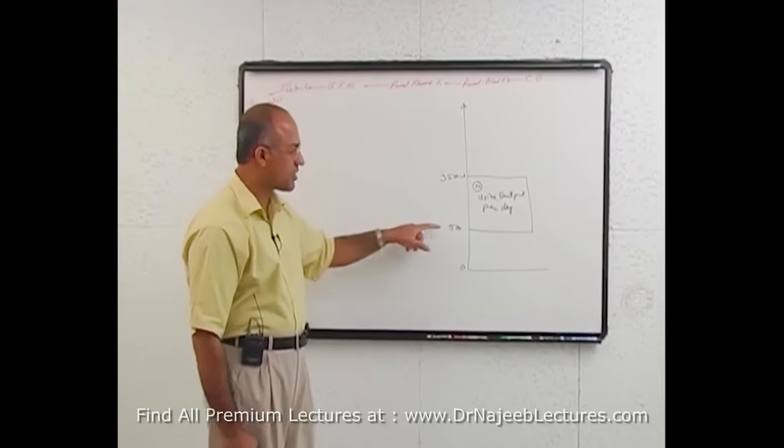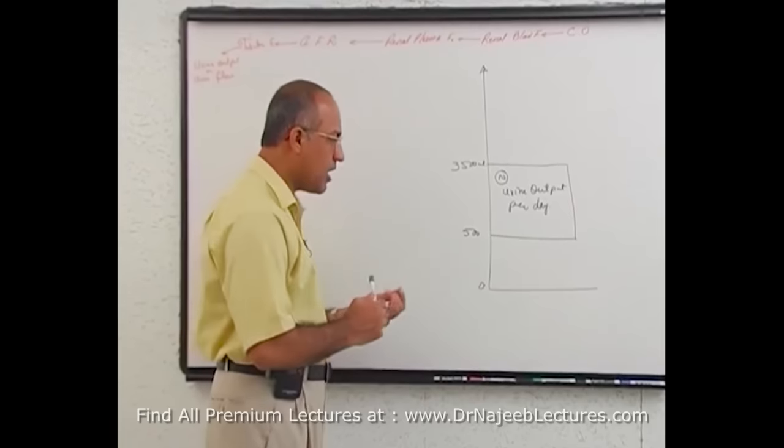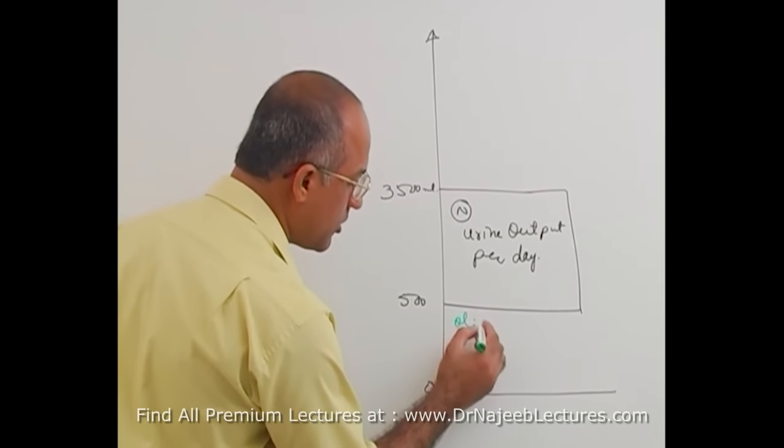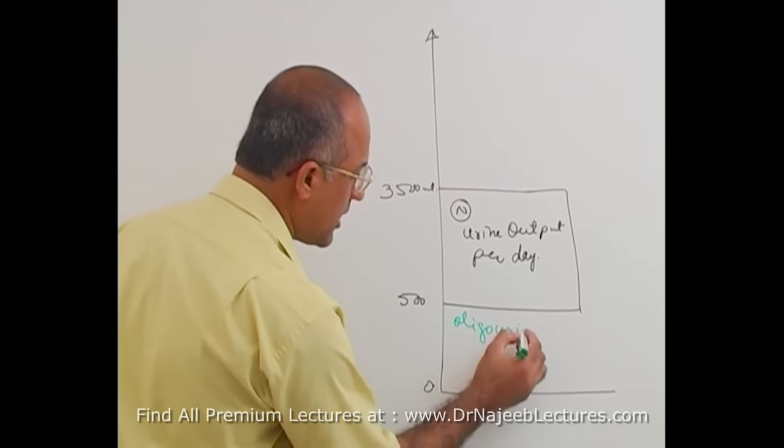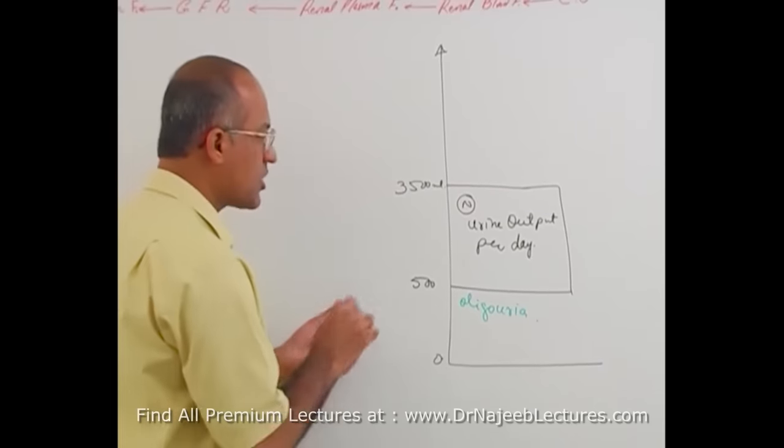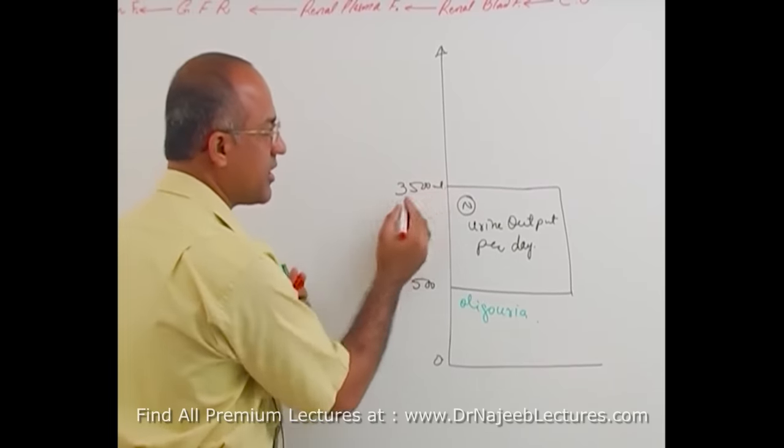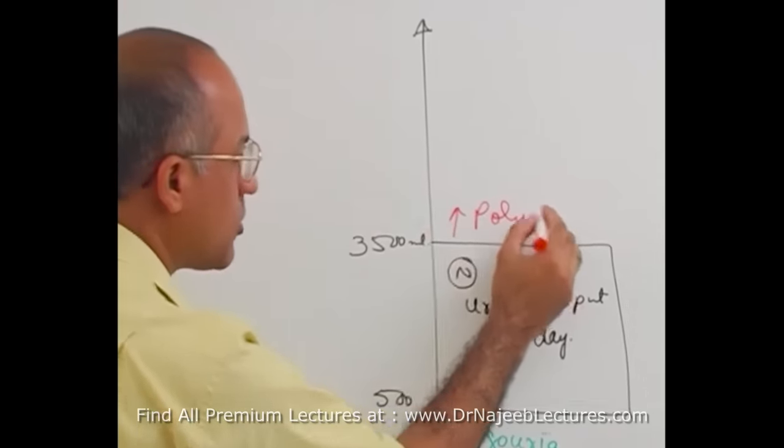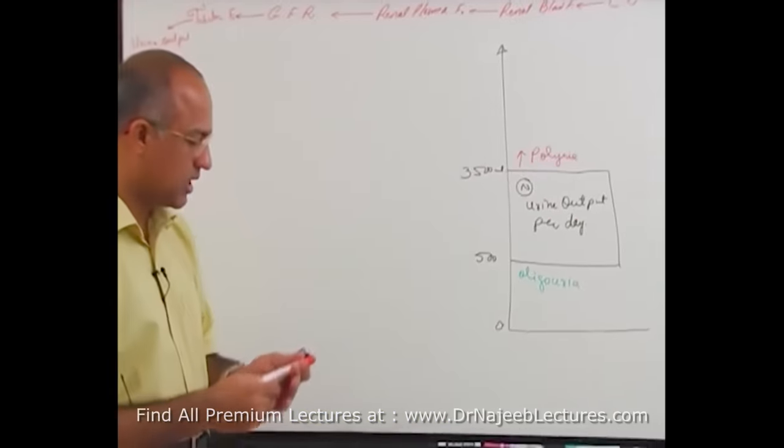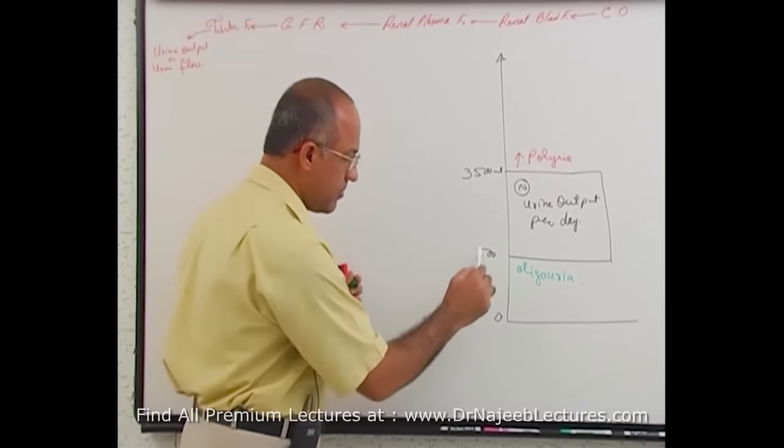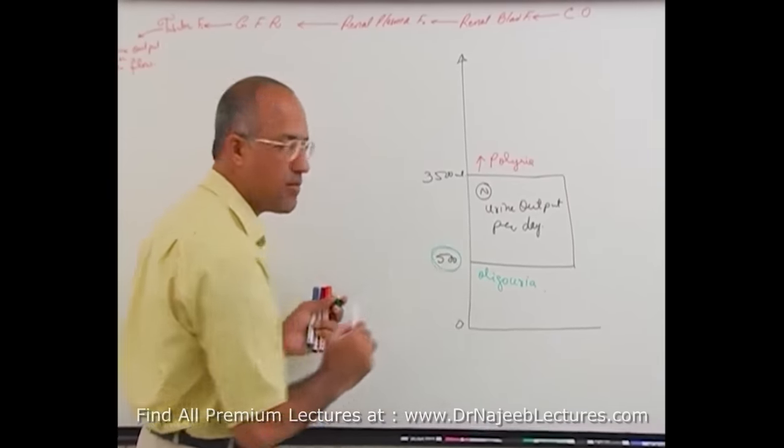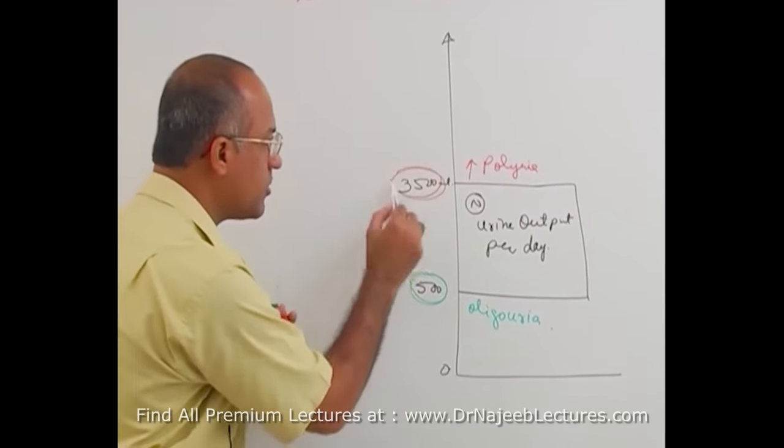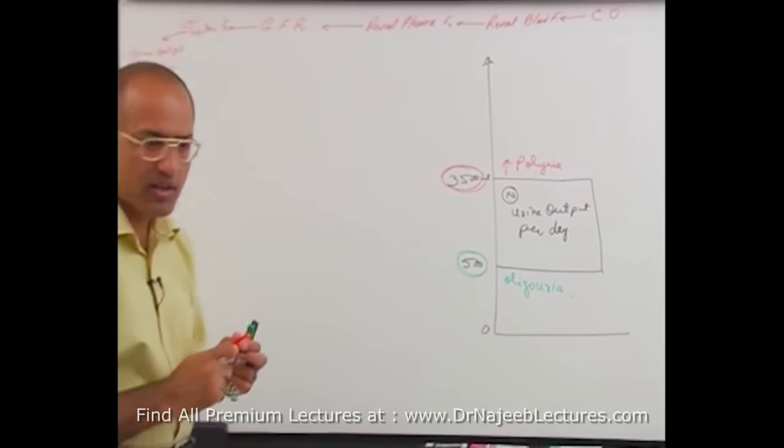Now we will talk about what we have already discussed. If urine output is less than 500 ml per day, the patient has oligouria, and if urine output is more than 3.5 liters per day, we call it polyuria. We have to think why for oligouria the cutoff point is around 500 ml and why for polyuria we put a cutoff point around 3500 ml.